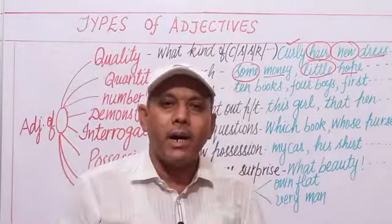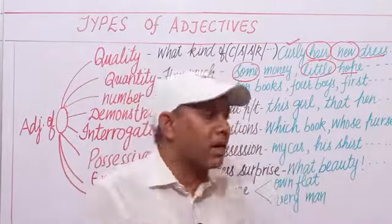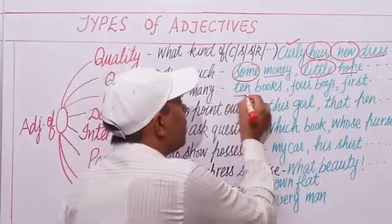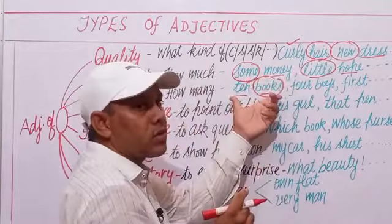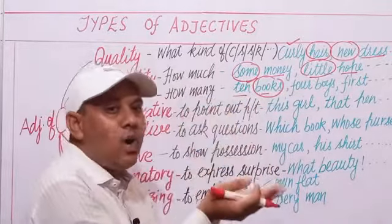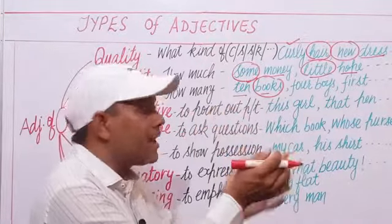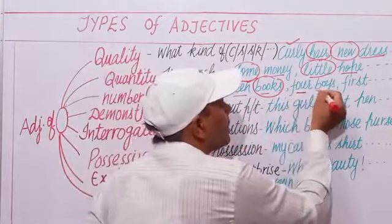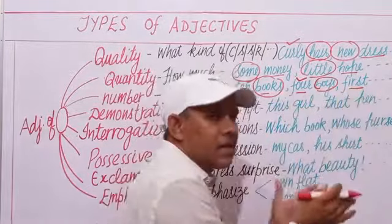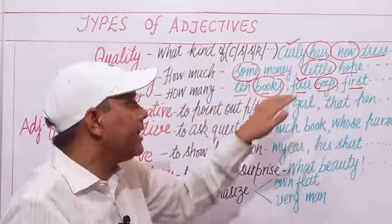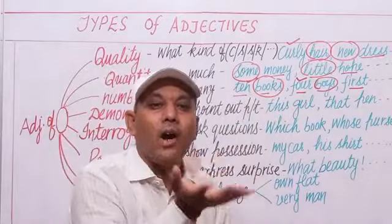Adjectives of number are of two types: ordinal and cardinal. For example, 'ten books' — 'ten' tells us how many books. 'Four boys' — 'four' is an adjective of number. 'First, second, third' are ordinal adjectives of number. Adjectives of number tell us how many persons or things there are.